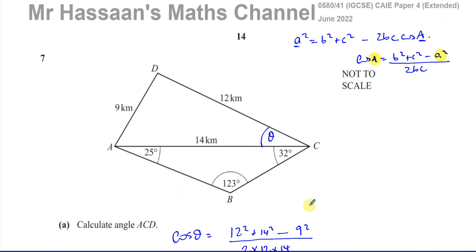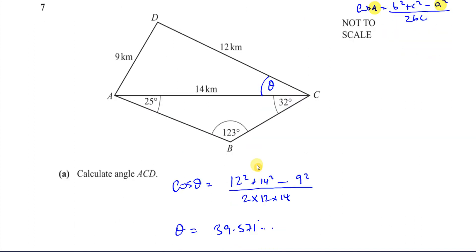So the key point is we can use the cosine rule to find the angle we're looking for. Whatever angle you're trying to find, the side opposite that angle goes in the A position, and the other two sides go in the B and C positions. For example, if I were finding this other angle, I would use 9² + 14² − 12² in the numerator.